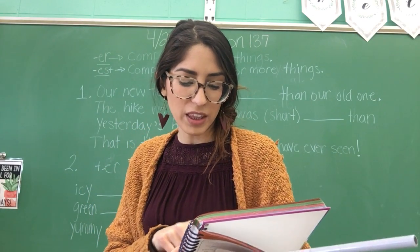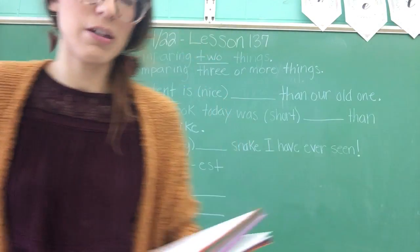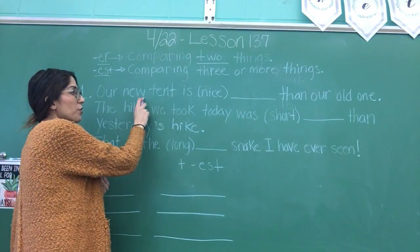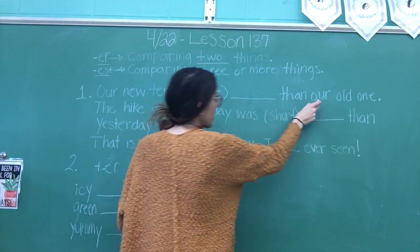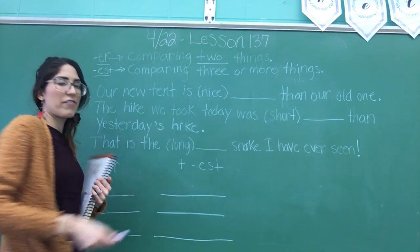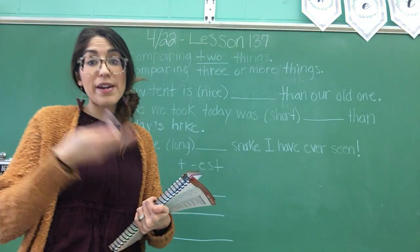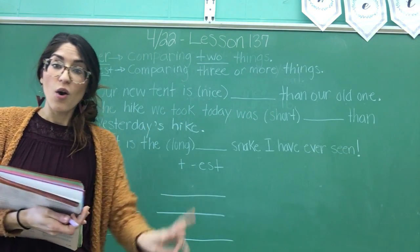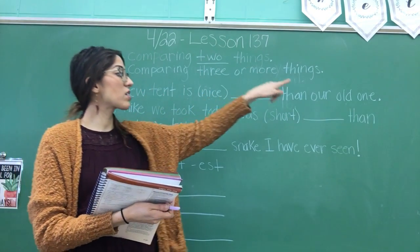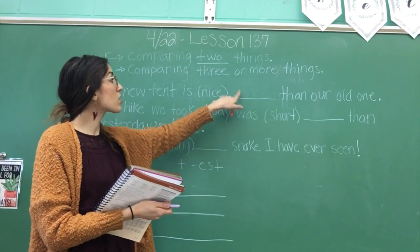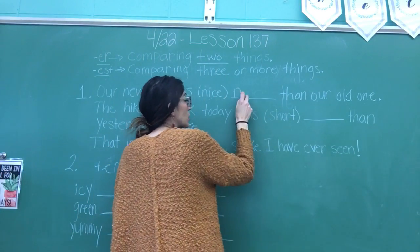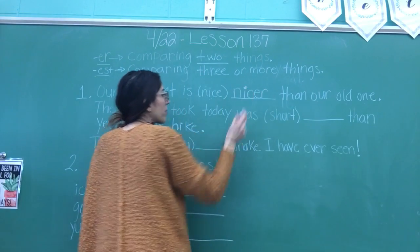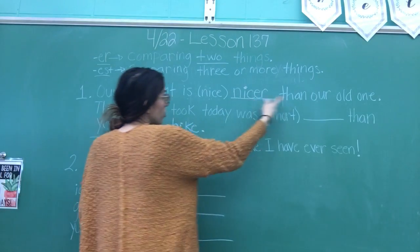Let's do number one: read the sentences, write the correct adjective in the blank. 'Our new tent is nice blank than our old one.' We're going to use the word 'nice' given in parentheses. So what are we going to write — nicer or nicest? They're comparing only two tents: the old tent and the new tent. Only two things, so we use ER. We spell it N-I-C, drop the silent E, and add ER. Nicer. 'Our new tent is nicer than our old one.'